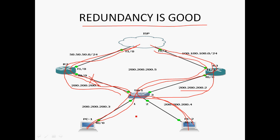Instead of manually assigning the default gateway, when using First Hop Redundancy Protocol we can assign a virtual IP. Here the virtual IP is 200.200.200.5. Next, it will automatically create a virtual MAC address for this virtual IP address. So now if R2's link goes down, we do not need to change the default gateway for PC1 and PC2 — it automatically switches over to R3 router.